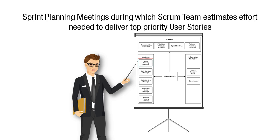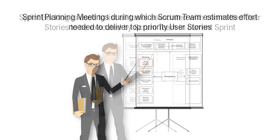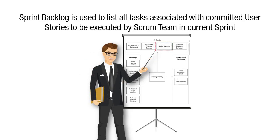Sprint planning meetings allow the Scrum team to estimate the effort needed to deliver top priority user stories and commit to a set of user stories for completion in the sprint. The sprint backlog lists all the tasks associated with the committed user stories to be executed by the Scrum team in the current sprint.